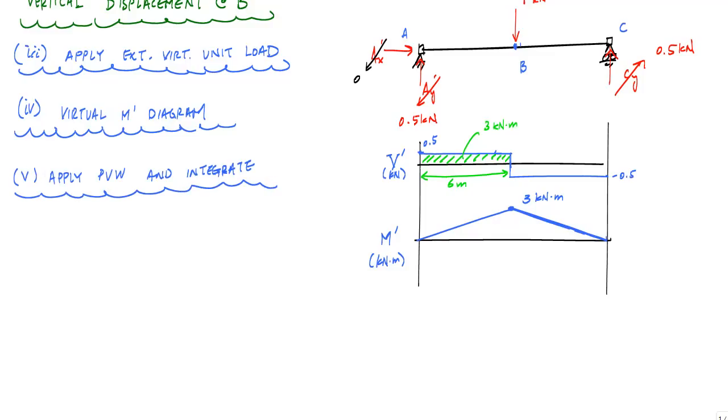And here, because I am applying a virtual unit force, my formulation is 1 kilonewton times the displacement or the magnitude of displacement at point B equal to the integral of the entire length of the beam of the virtual moment diagram times the real curvature dx.